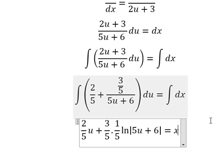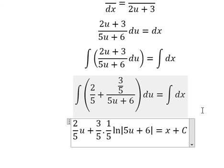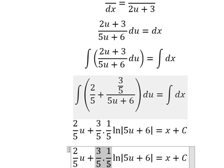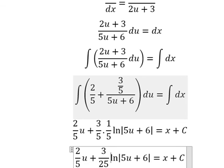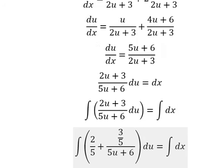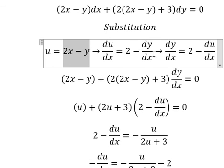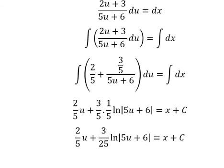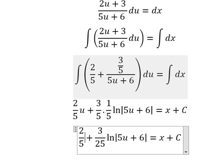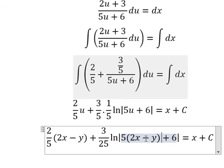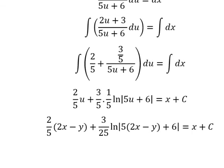This one we have x. So we have 3 over 25. For u, we have 2x minus y. This is the end. Thank you for watching. See you soon.